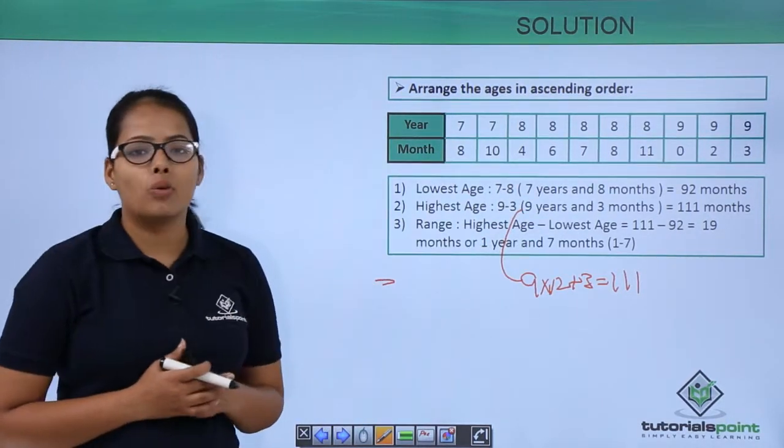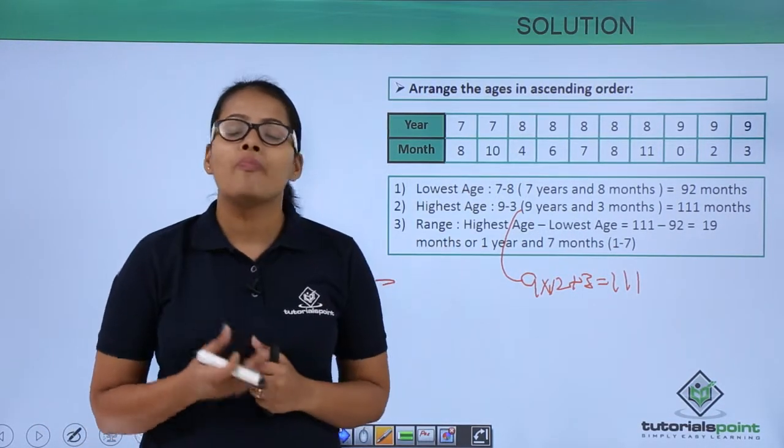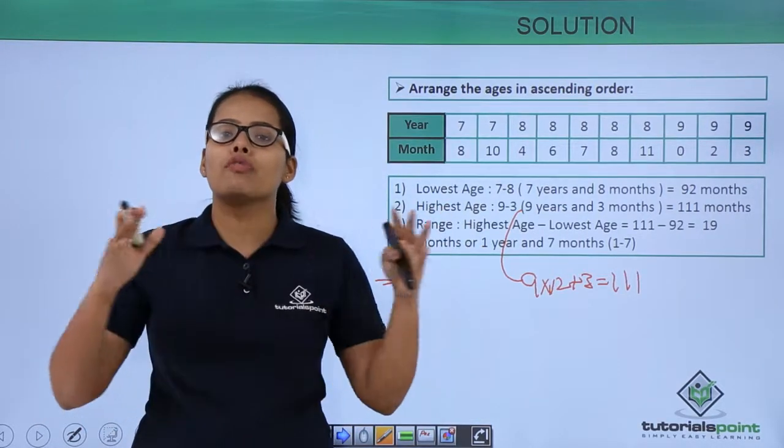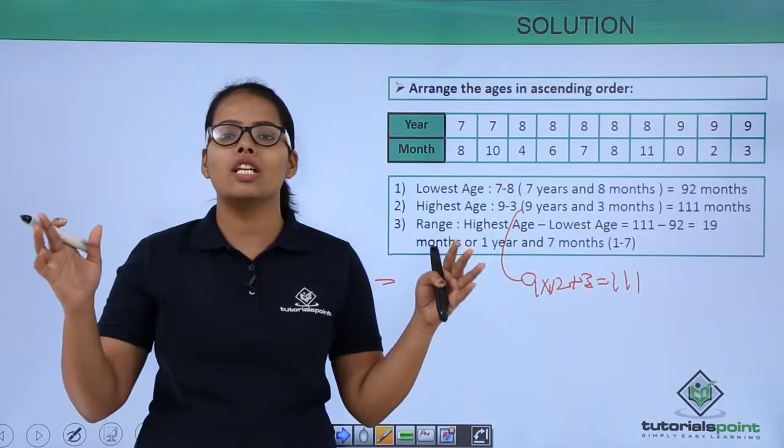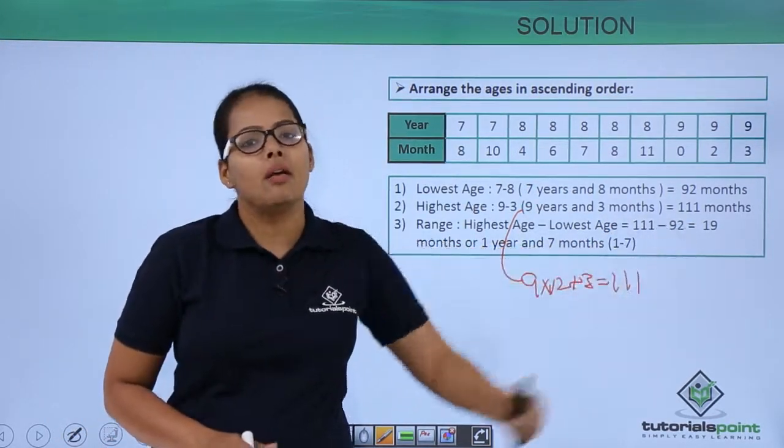Now you need to find out the range. How are you going to find out the range? You know that range is the difference of highest age and lowest age. So all those observations which is falling under highest age and lowest age will give you the range of experiment. So here our range will be 19 months.